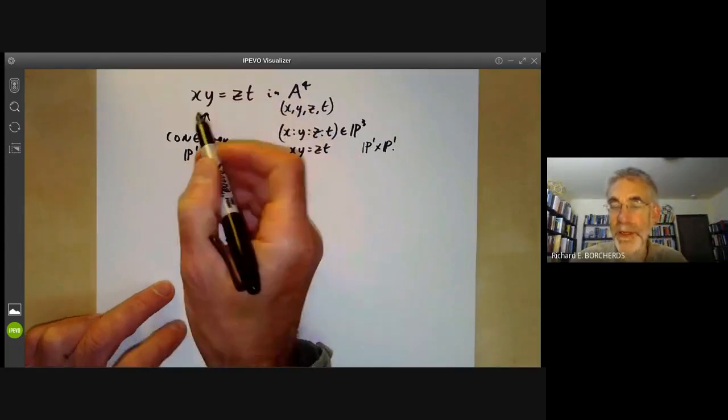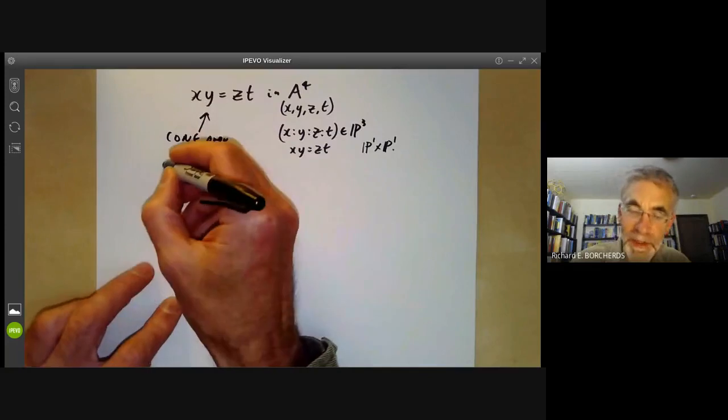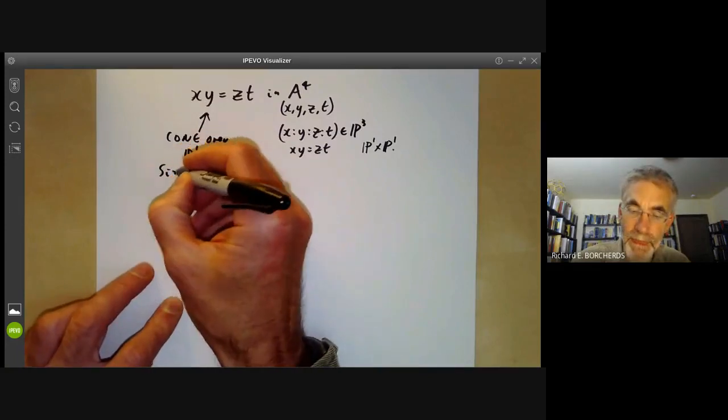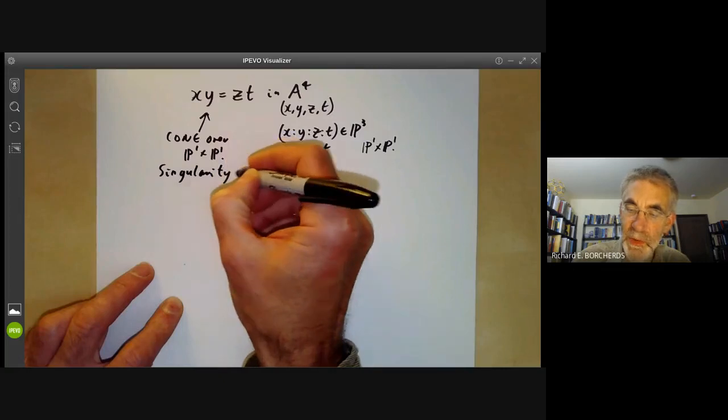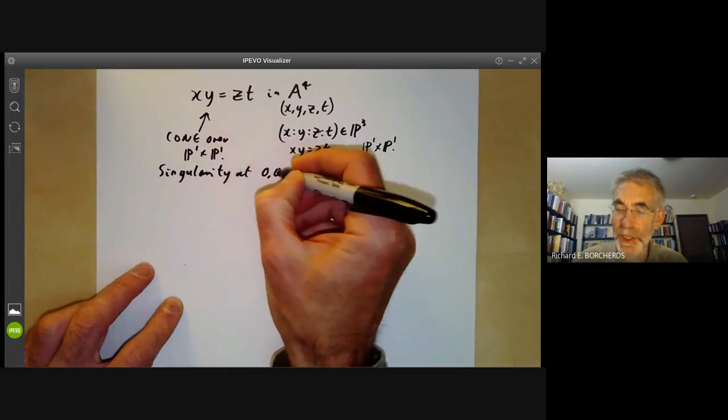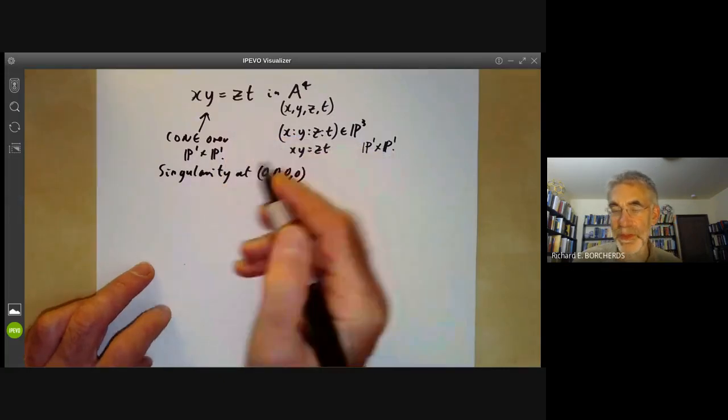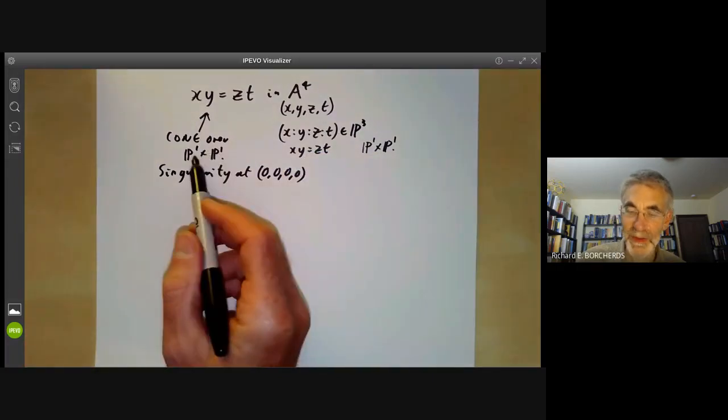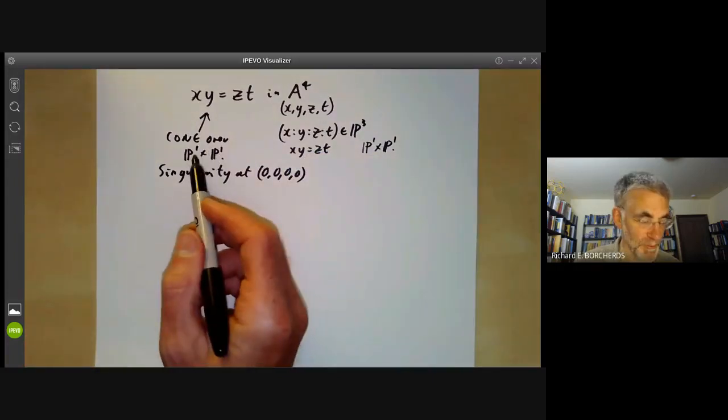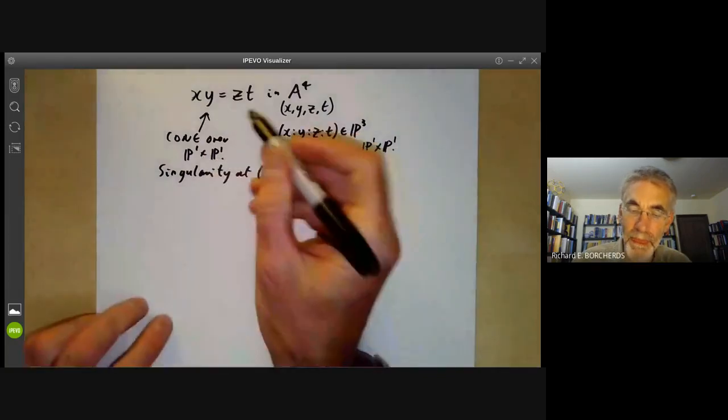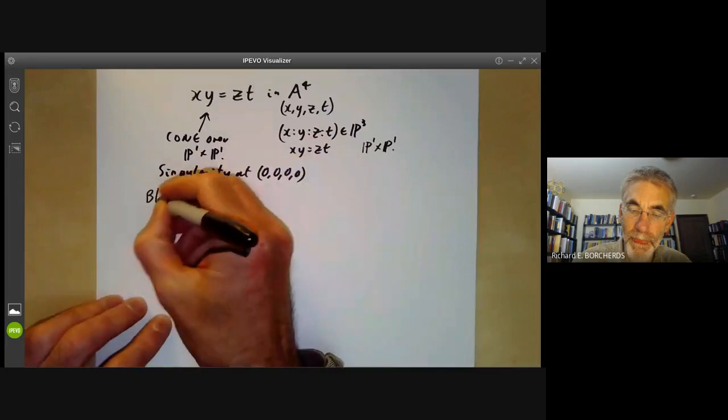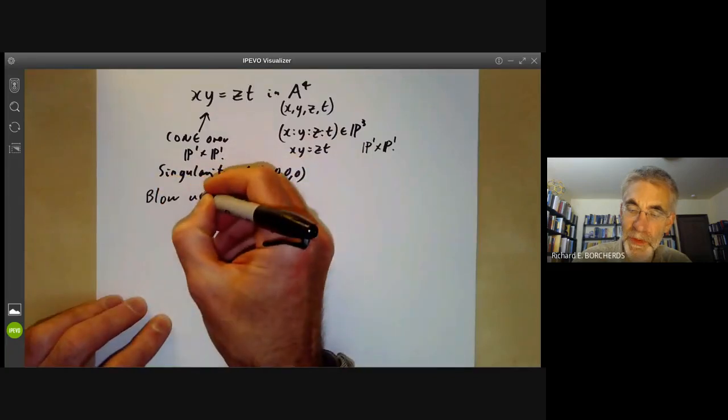In particular, it's got a singularity at the origin at (0,0,0,0), which is the singular point of the cone. We can resolve the singularity by blowing up at the point (0,0,0,0) in A4.